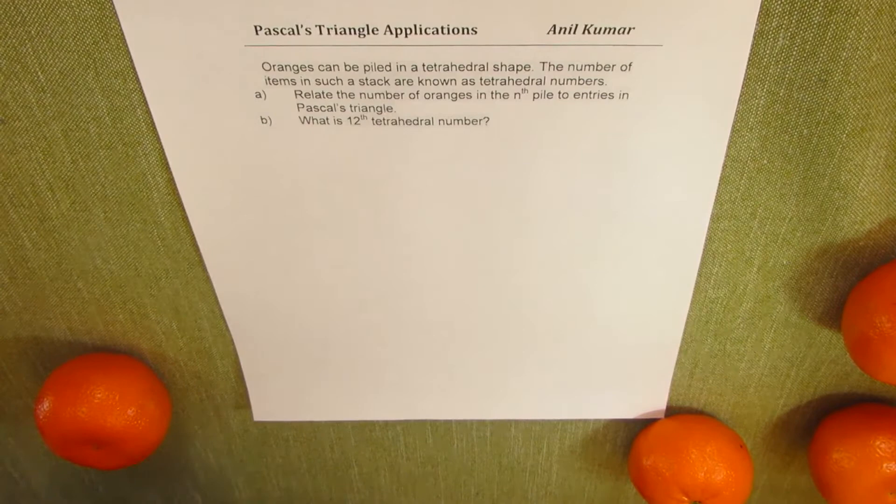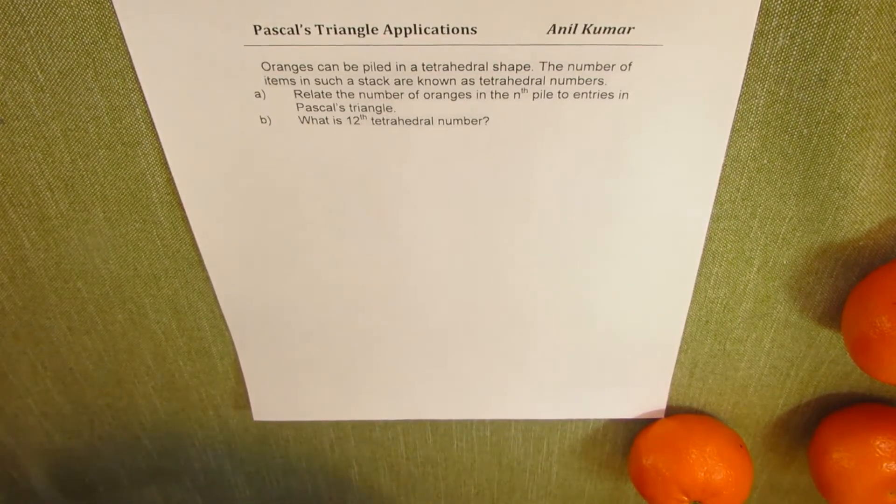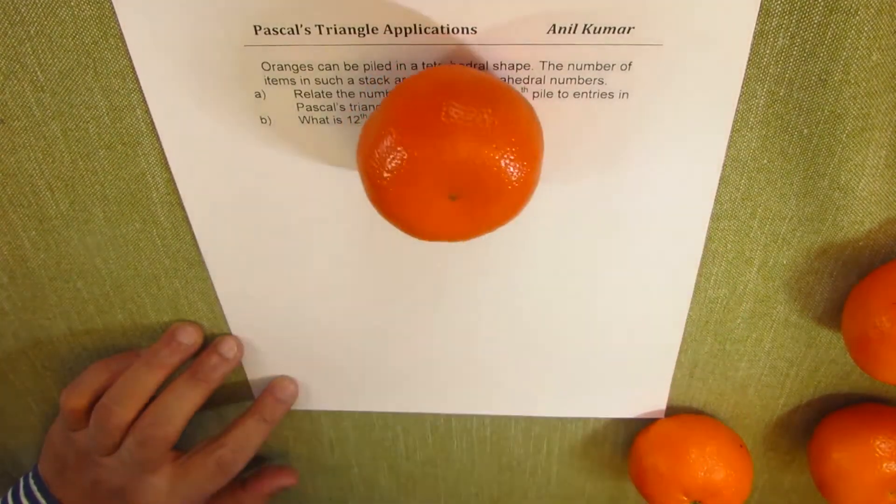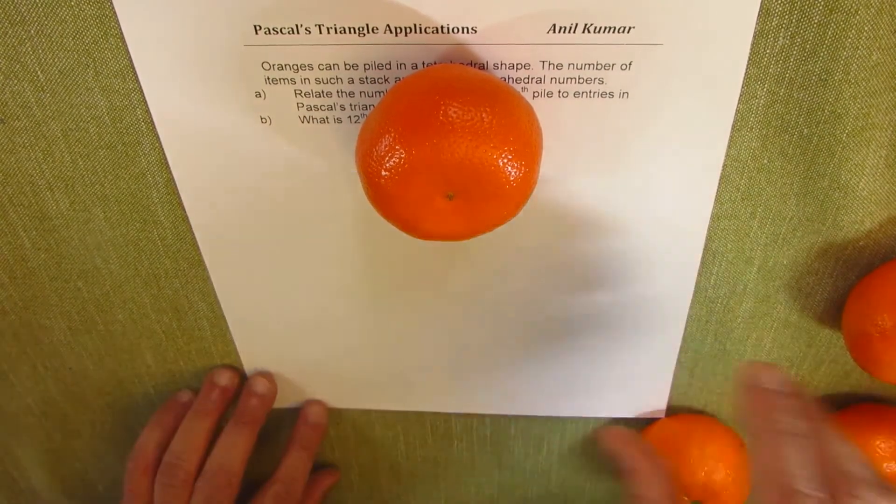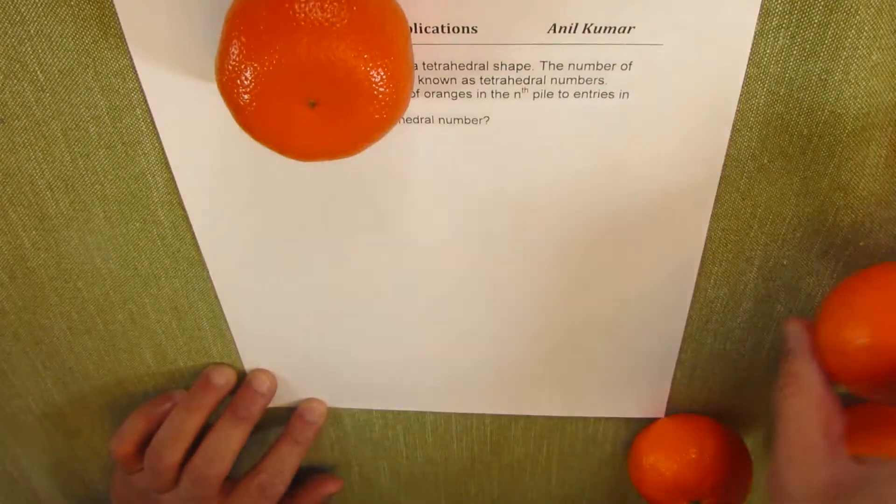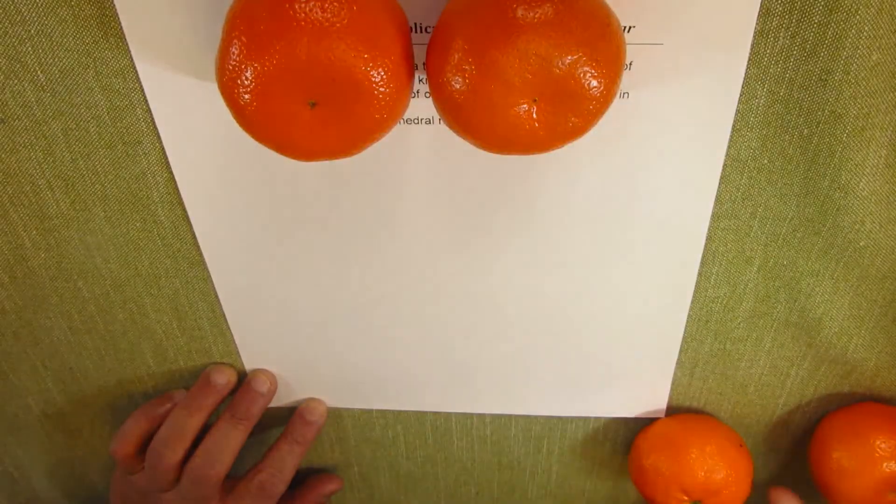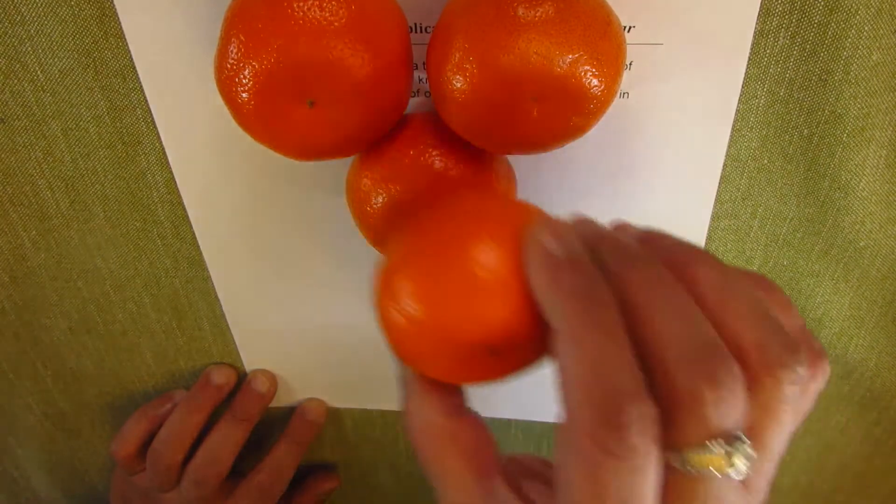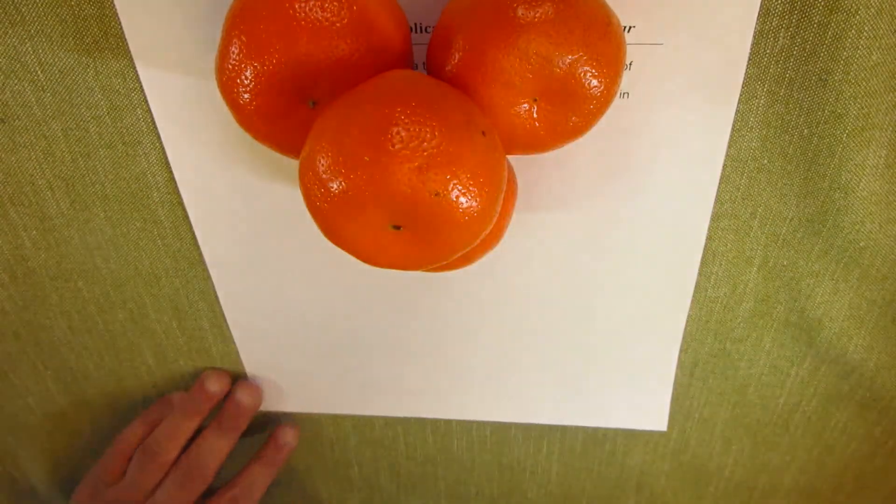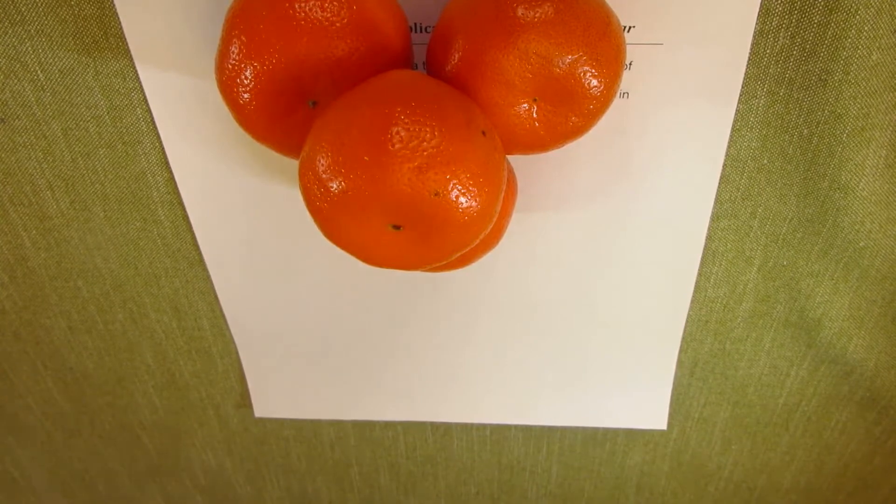Now let us try to make a pile of oranges. We can begin with just one. So in the first pile we have one. Now if I have to make the second pile, then we could have three at the bottom, like this, and one over them. So in the second pile we have four oranges.